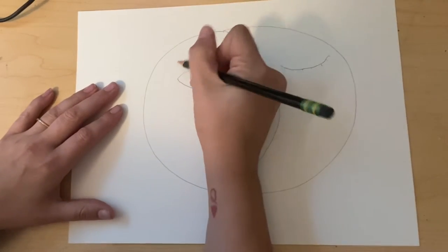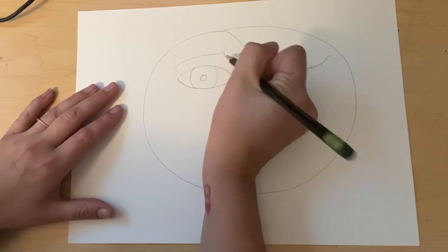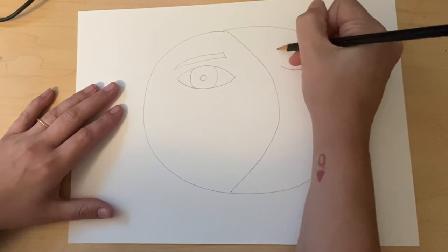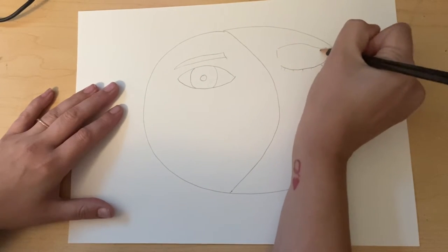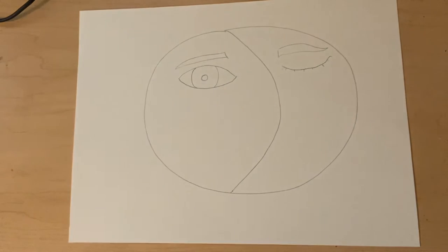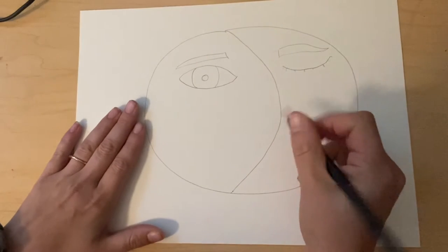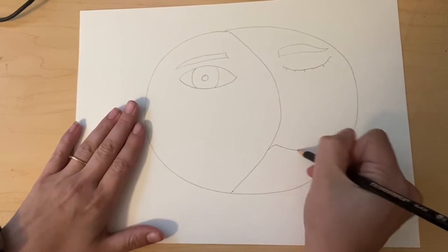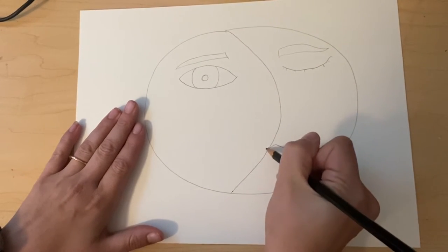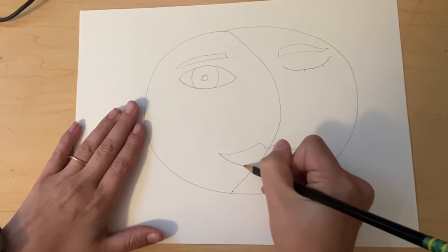Next I'm going to add some eyebrows, and I'll need an eyebrow on each side. Then I'm going to draw the mouth that goes between. So again on one side I'm going to draw half of the mouth and on the other side I'm going to draw the other half of the mouth.